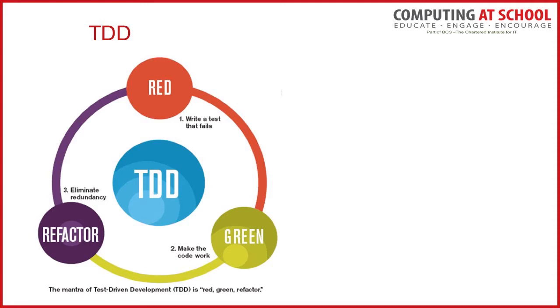If they don't get it right, that's your baseline. Teach the topic, then test again. Hopefully students all do really well. There is evidence, if senior leadership demands it, of the progress made: they couldn't do it, I taught it, now they can. If they don't get it right at the end, we need to do some debugging — teach it again, explain it a bit better. We have that cycle. Then of course we'd want to refactor, just as in test-driven development.